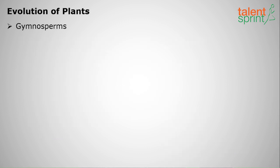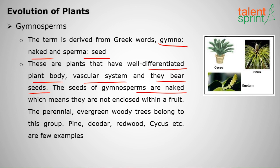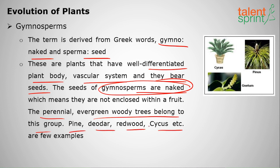Gymnosperms are dispersed by seeds. The word comes from Greek: 'gymno' means naked and 'sperma' means seed. These plants have well-differentiated body and vascular system, but their seeds are naked — not enclosed. They are perennial and evergreen. Examples include pine, deodar, redwood, Cycas, Pinus, and Gnetum.